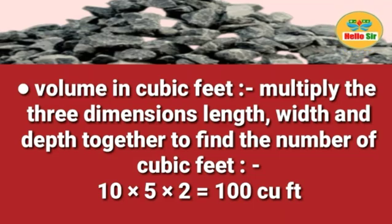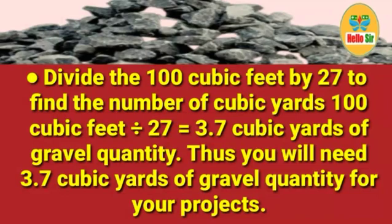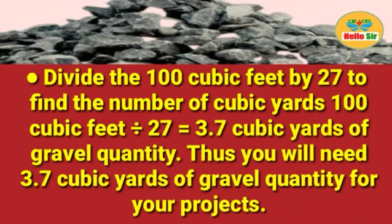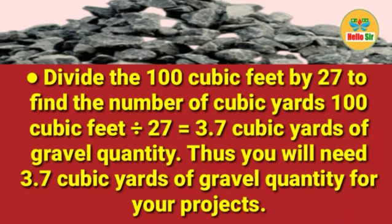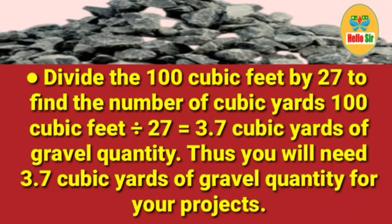Then divide the 100 cubic feet by 27 to find the number of cubic yards. So 100 cubic feet divided by 27 equals 3.7 cubic yards of gravel. Thus you will need 3.7 cubic yards of gravel for your project.